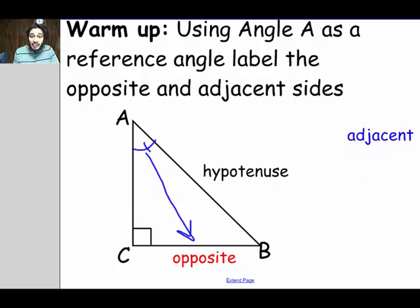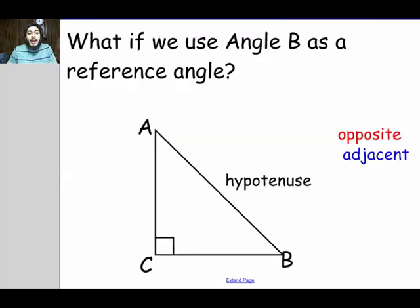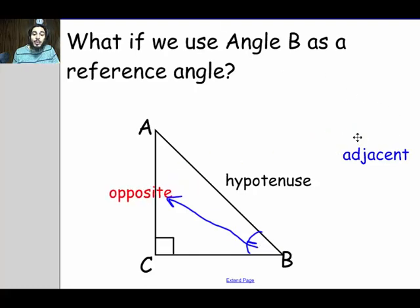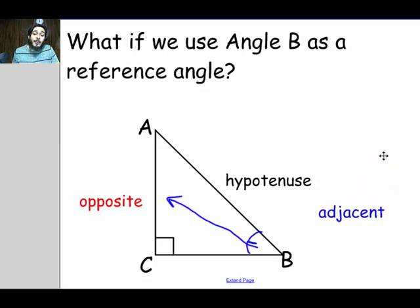And the adjacent side will be right next to the reference angle. What if we use angle B as a reference angle? Now that would mean the opposite side must now be across from angle B. So the opposite side would be side AC. And then the adjacent side must be next to the reference angle, so the adjacent side is side BC.